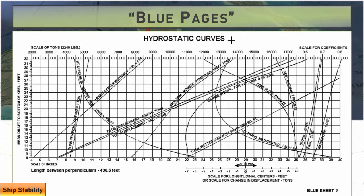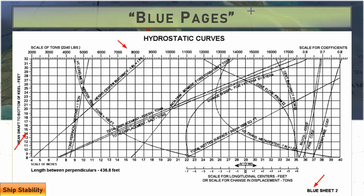This is what the hydrostatic curve sheet looks like. It's pretty busy — there are a lot of different lines and a lot of data you can derive from this chart. You can see in the corner it's labeled as a blue sheet. Today we're looking at questions involving displacement, which is the top row. We'll find that number based on the draft values on the left side. There are two curves in the middle: the fresh water and salt water displacement curves. You can ignore the other lines for now, but they'll come into play in future videos.